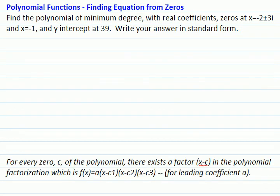Now, for every zero c of the polynomial, there exists a factor x minus c in the polynomial factorization, which we find by subtracting c from both sides.